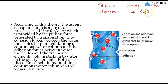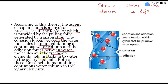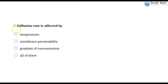According to this theory, the ascent of sap in plants is a physical process. The lifting force is provided by the pulling force generated by transpiration. Cohesion force between water molecules helps in maintaining a continuous water column, and adhesion forces between water molecules and xylem elements help water stick to the xylem. Together, cohesion and adhesion create tension that allows upward movement of water.